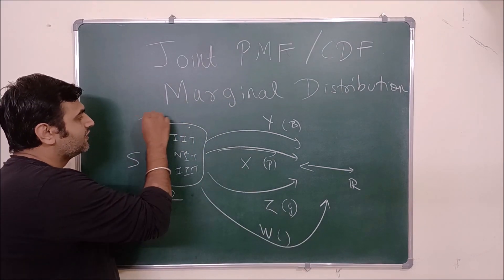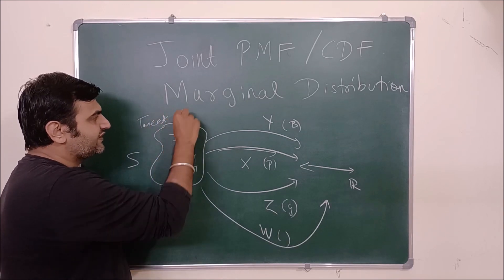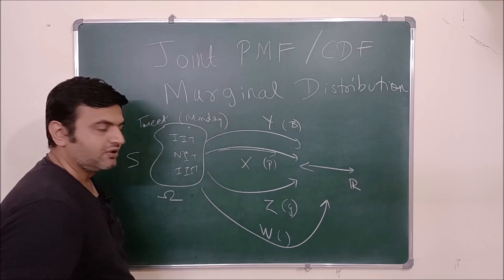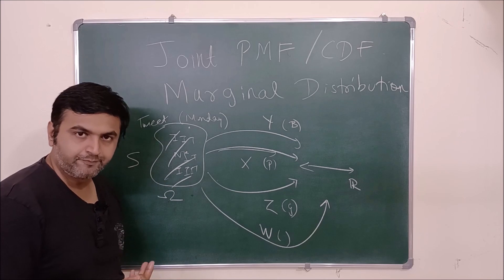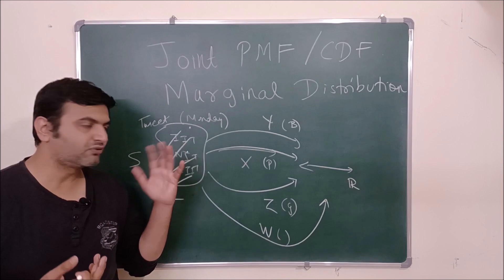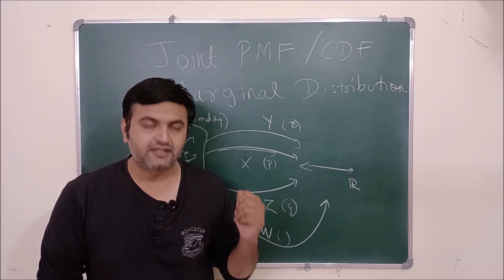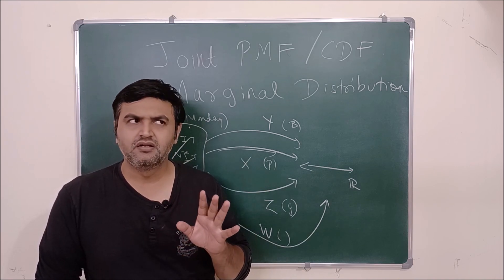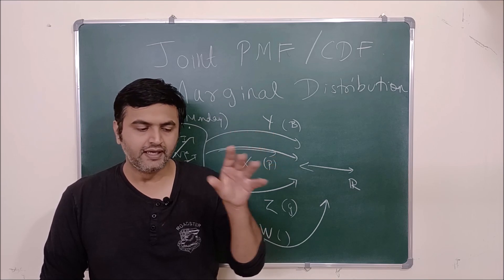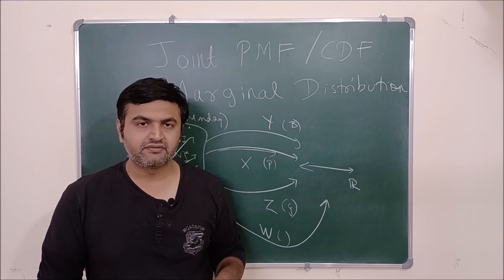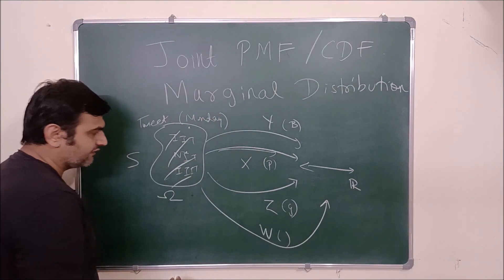Another example: suppose Twitter wants to analyze tweets received on a single Monday. The sample space is the collection of all tweets on that day — millions of them. One random variable X maps each tweet to the number of threads: a tweet under 280 characters maps to 1, a 300-character tweet maps to 2 threads, a tweet with three threads maps to 3, and so on up to a maximum of 10. So X ranges from 1 to 10.